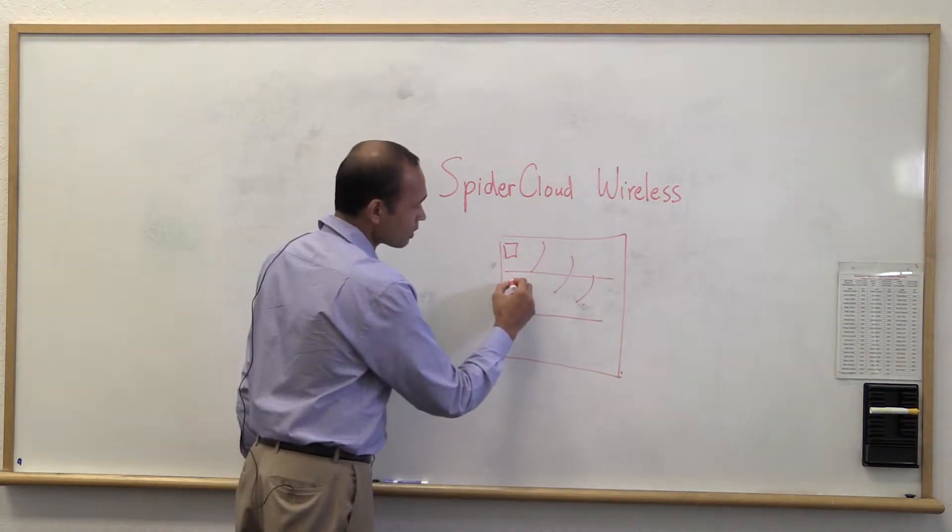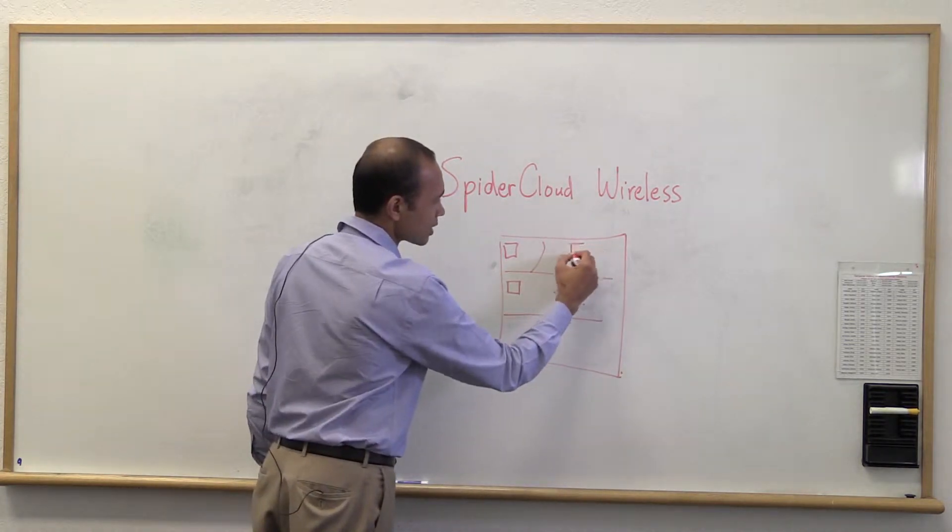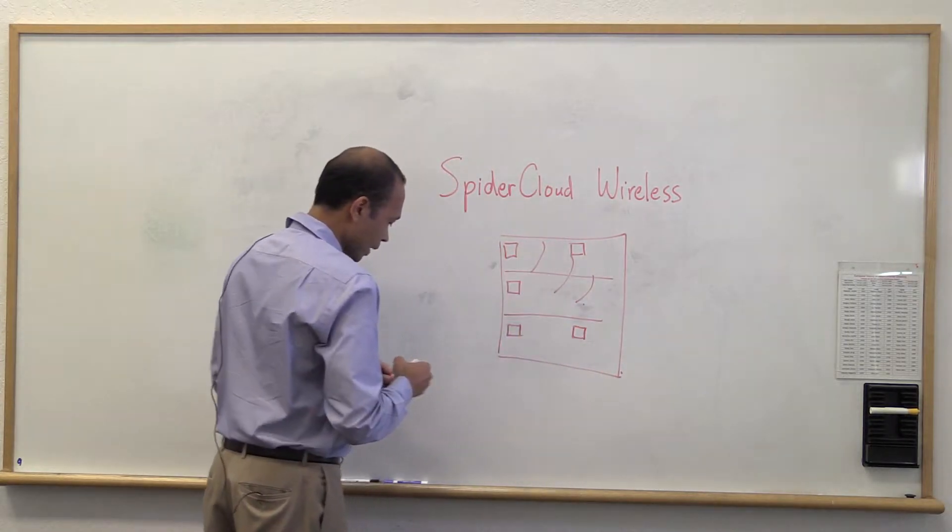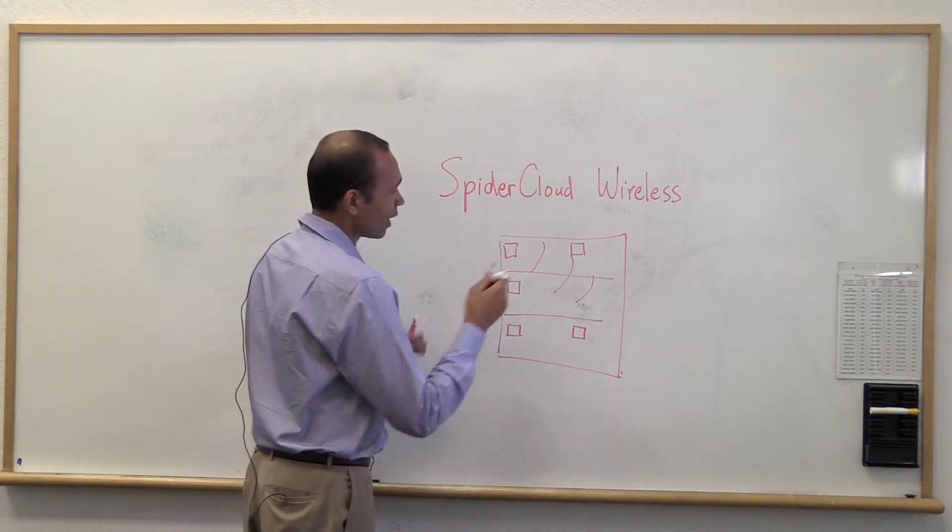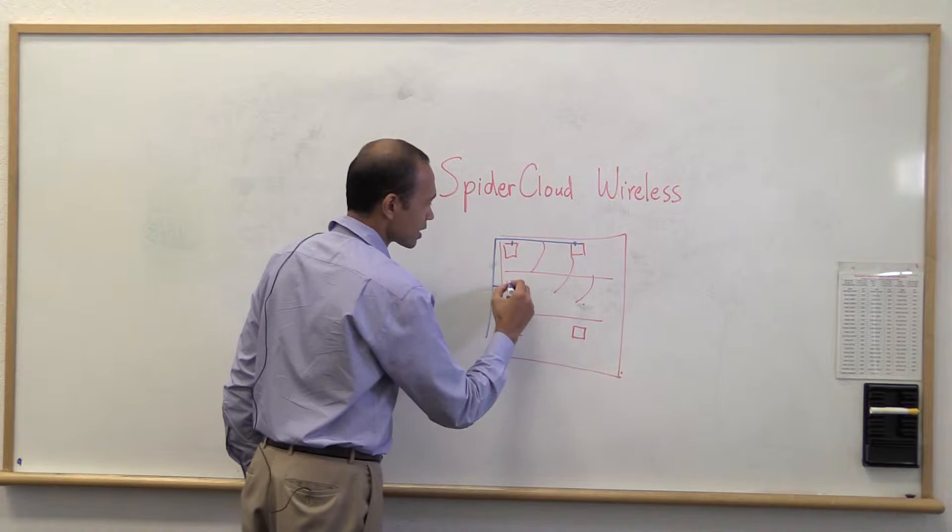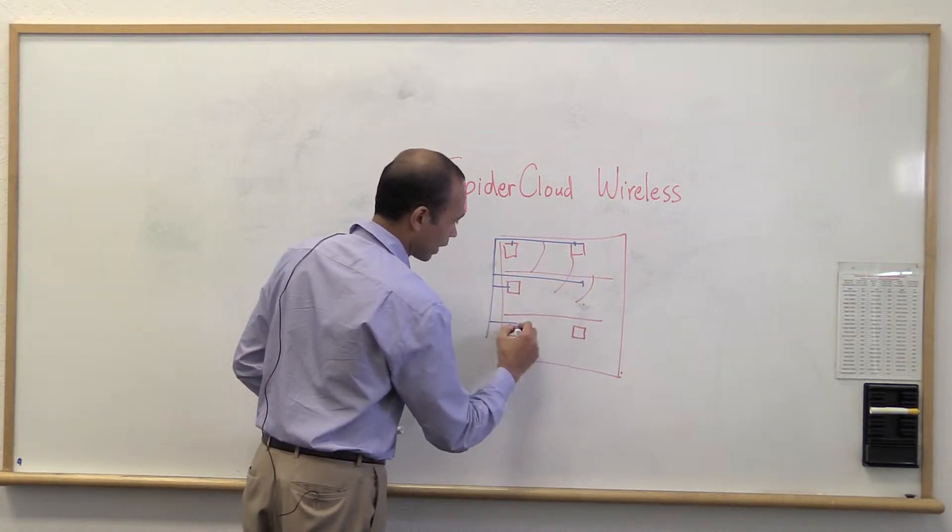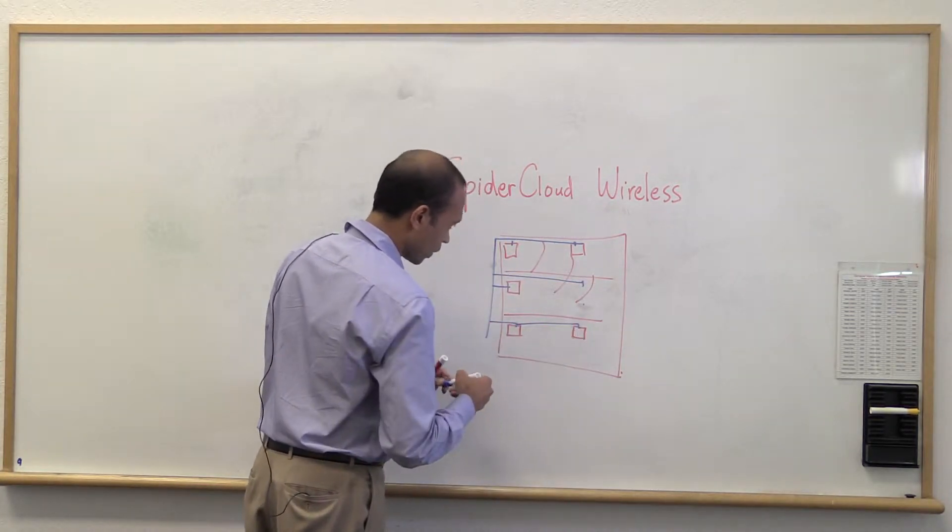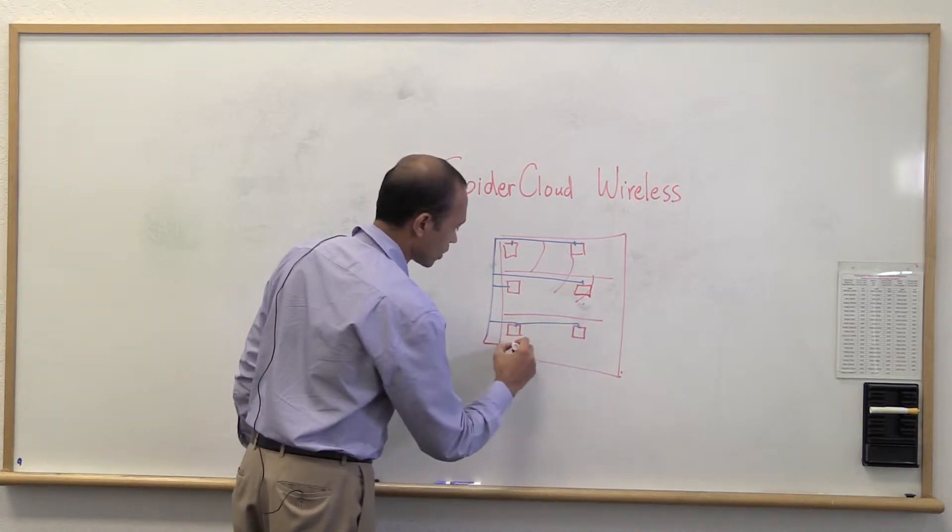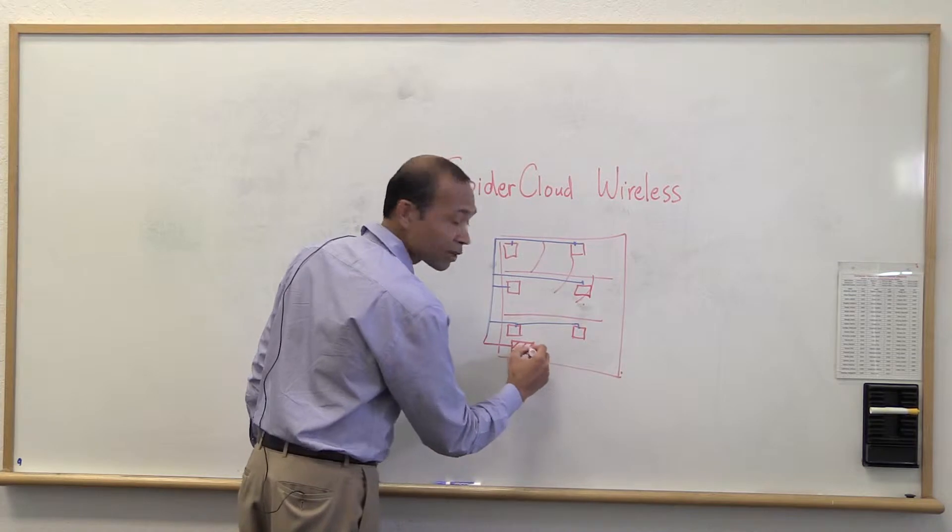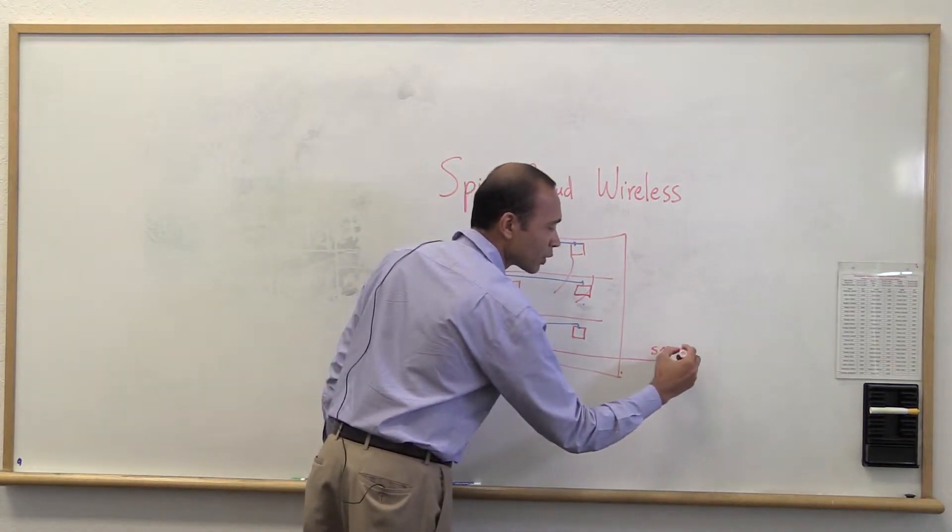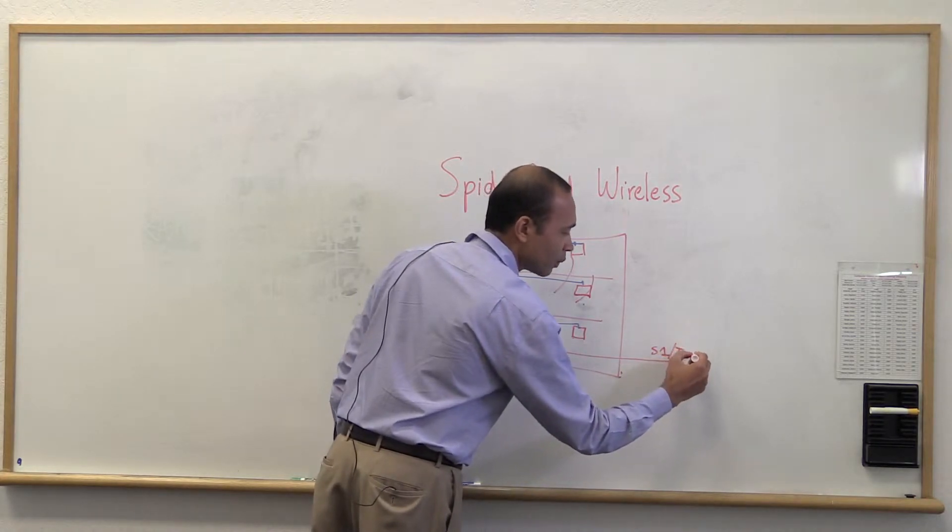With the SpyderCloud system you can actually put multiple small cells inside the building. And then these small cells run over the Ethernet LAN. So this is the normal Cat5 Ethernet LAN that many buildings have. All these small cells connect over the Ethernet LAN and then they connect to a SpyderCloud wireless controller that we call the Services Node. And then the Services Node connects back to the operator's core network over the S1 or IOH interface.